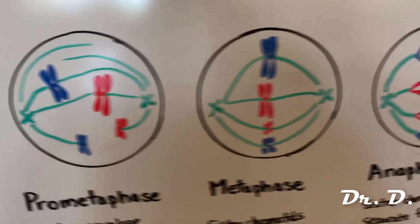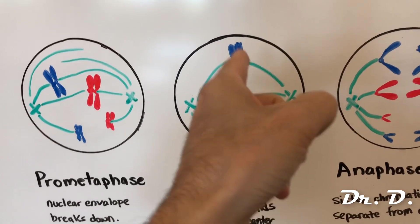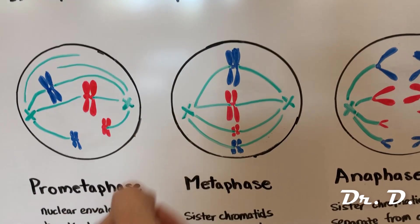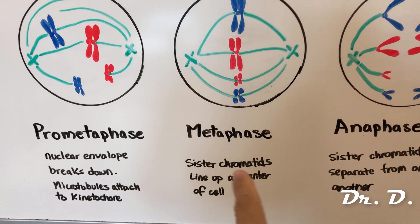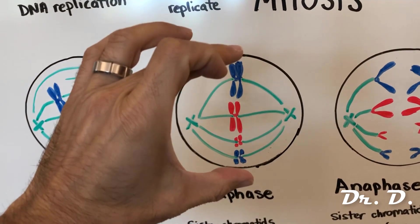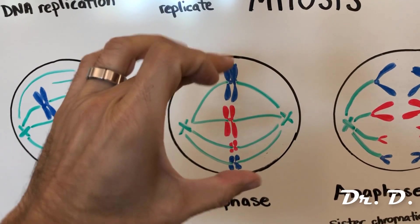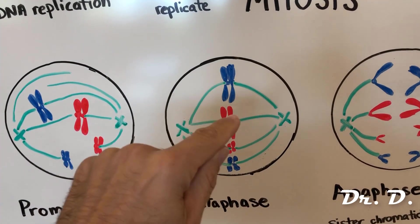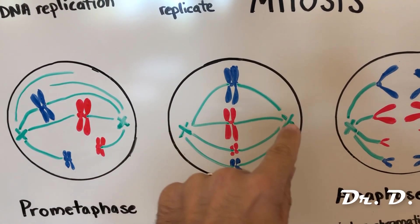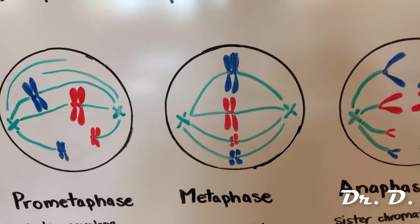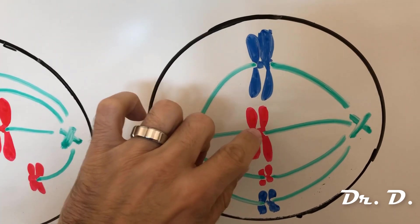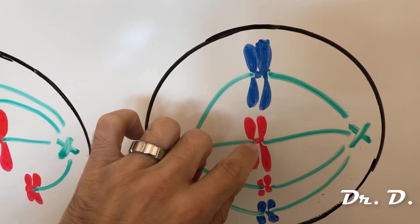By metaphase, the sister chromatid pairs have made their way to the center of the cell — the imaginary metaphase plate. All of the sister chromatids are lined up at the center, each attached at their kinetochores to microtubules from opposite poles, opposite centrosomes.